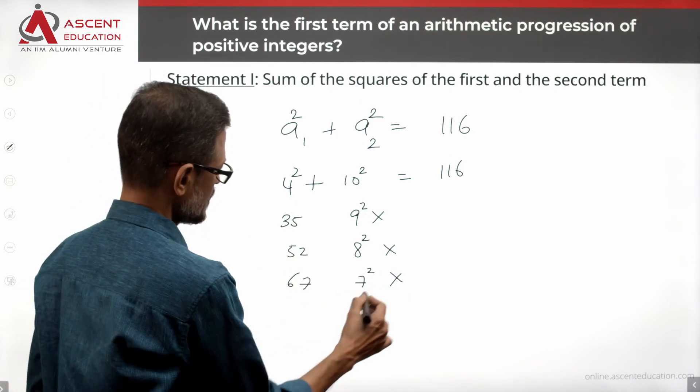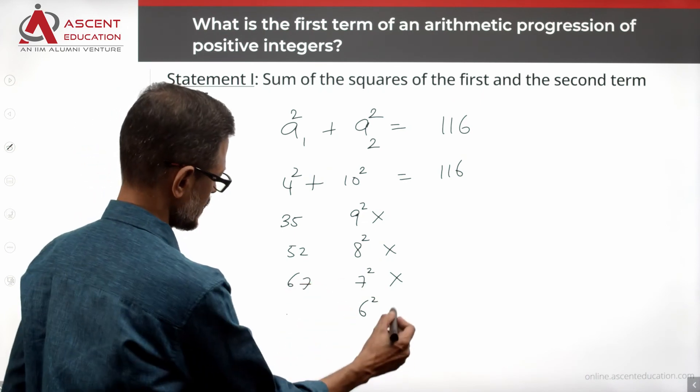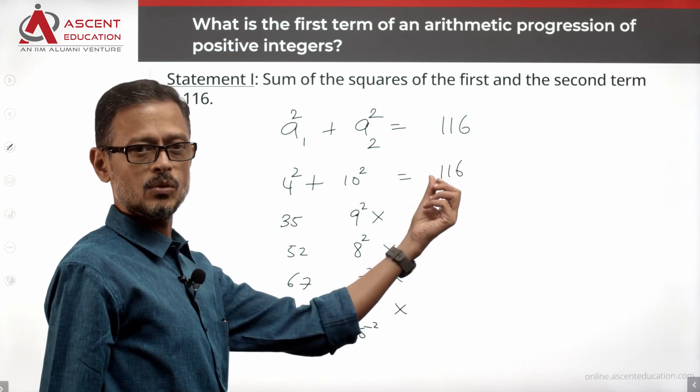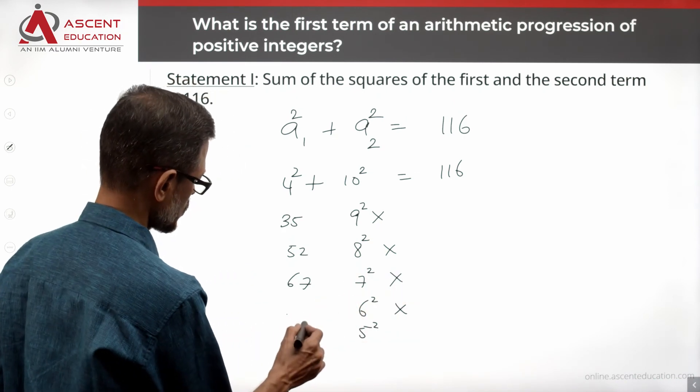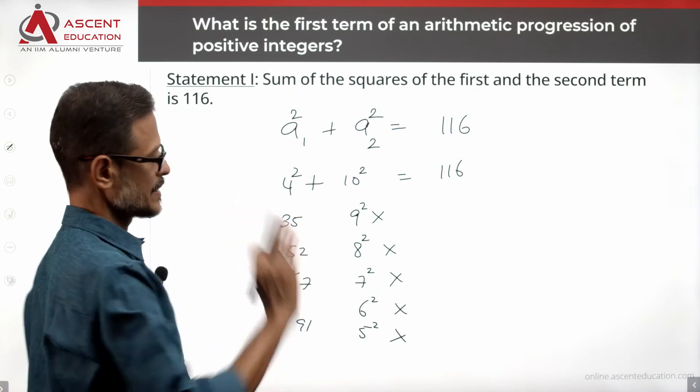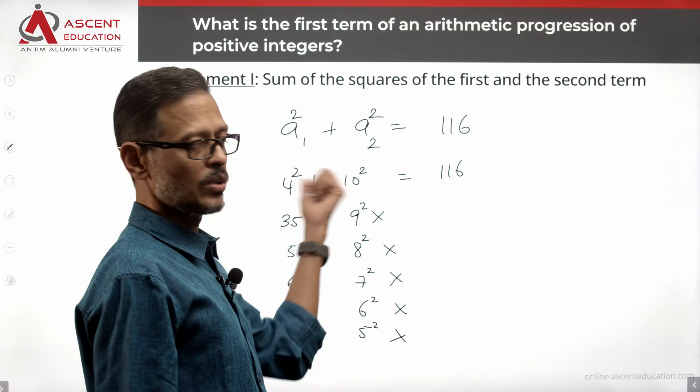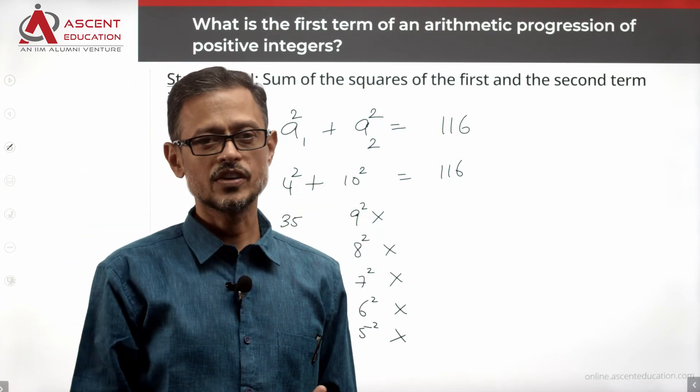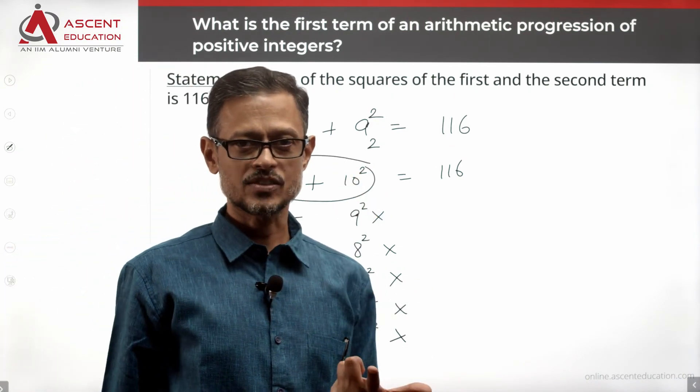6 square, 36. Then it's 80, which is not a perfect square. That is also not possible. 5 square, 25. We are left with 91, which is not a perfect square. So that is also ruled out. 4 square, we already did. 3 square, 9. Then 107, which is not a perfect square. 2 square, 4. Then 112 is not a perfect square. So 116 is the sum of the squares of the first two terms. The only possibility is when it has 4 square and 10 square.